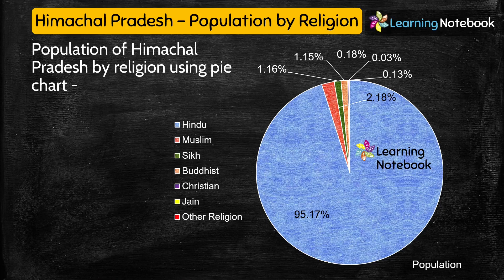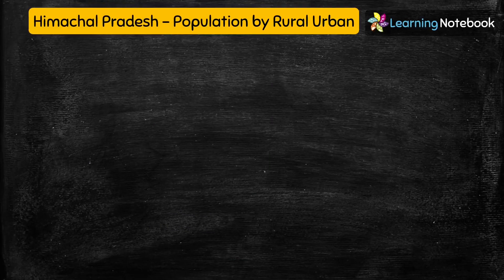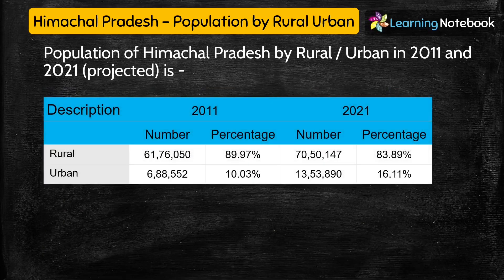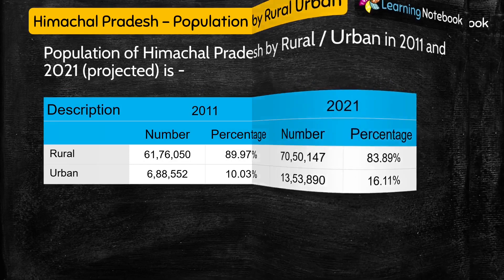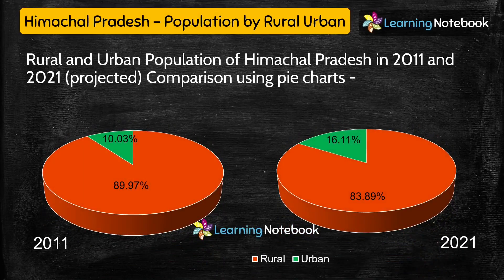If you have not yet subscribed to our channel Learning Notebook, then do subscribe and make sure to press the bell icon. Now, the next idea for your Maths Art Integrated Project is to depict the population of Himachal Pradesh by Rural and Urban Division. See here how we have used two pie charts to compare rural and urban population of Himachal Pradesh for two years.